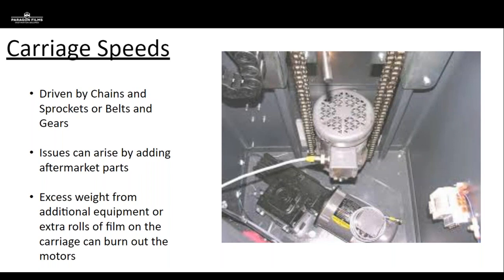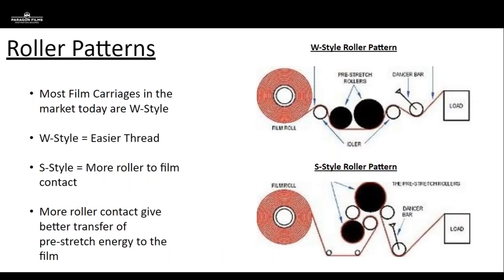You can observe the overlap by watching the pallet wrap as the carriage moves up through the cycle. Always look for whether the carriage is moving too fast or too slow, and how fast the turntable or rotary arm is rotating, because this will affect containment.